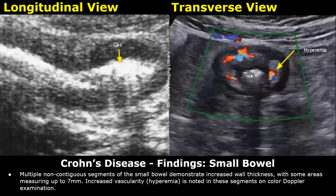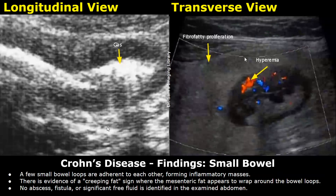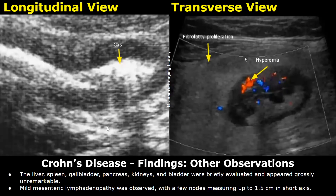A few small bowel loops are adherent to each other, forming inflammatory masses. There is evidence of a creeping fat sign, where the mesenteric fat appears to wrap around the bowel loops. No abscesses, fistulas, or significant free fluid identified in the examined abdomen. Mild mesenteric lymphadenopathy was observed, with a few nodes measuring up to 1.5 centimeters in short axis. The other organs were normal.